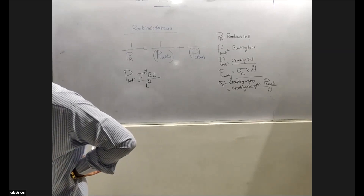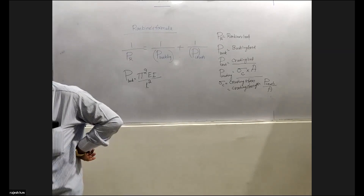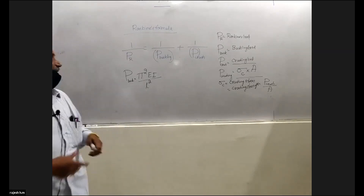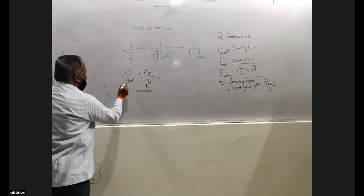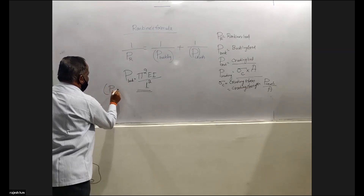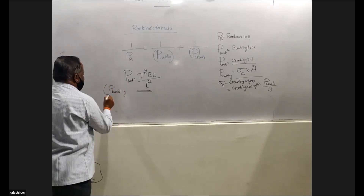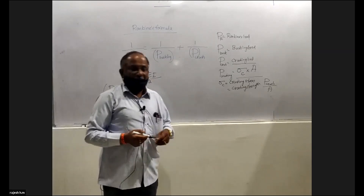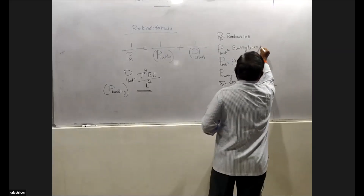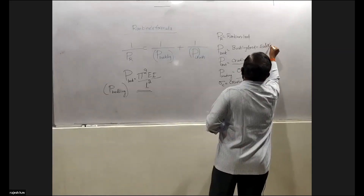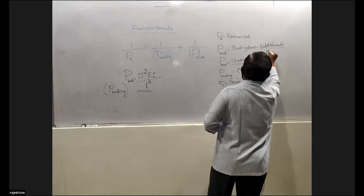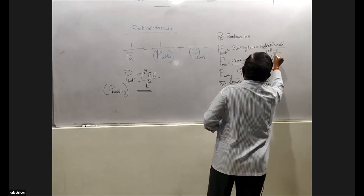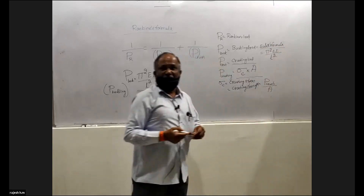The effective length is used in the formula. Now if there is a case, you take the buckling load — that is P_buckling means buckling load — using Euler's formula. Euler's formula equals pi squared EI by L squared. So pi squared EI by L squared is Euler's formula.